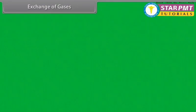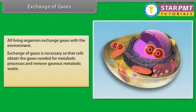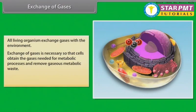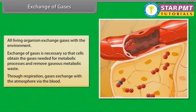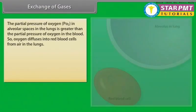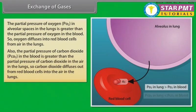Exchange of gases. All living organisms exchange gases with the environment. Exchange of gases is necessary so that cells obtain the gases needed for metabolic processes and remove gaseous metabolic waste. Gases exchange with the atmosphere via the blood. The partial pressure of oxygen in alveolar spaces in the lungs is greater than the partial pressure of oxygen in the blood, so oxygen diffuses into red blood cells from air in the lungs. The partial pressure of carbon dioxide in the blood is greater than the partial pressure of carbon dioxide in the air in the lungs.